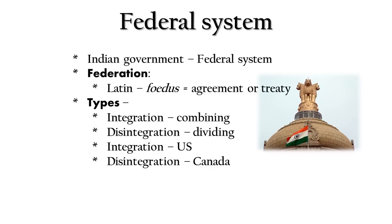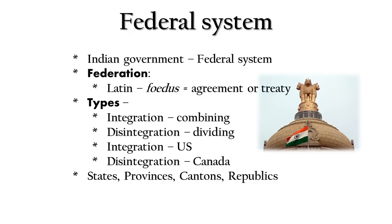The parts of a nation — that is, states — are called by different names in different countries. They are called states in the United States and in India, and provinces in Canada. In Switzerland they are called Cantons, and in Russia they are called Republics. This tells us that America, Canada, Switzerland, and Russia are all federal types of governments. The United States of America is the oldest federation, formed in 1787 after the American Revolution.